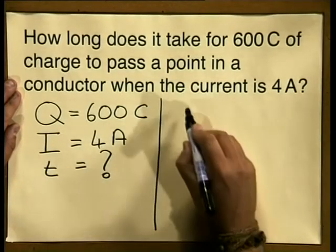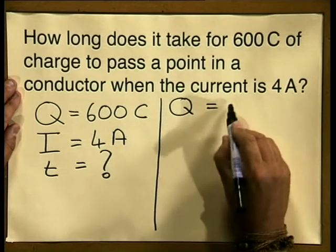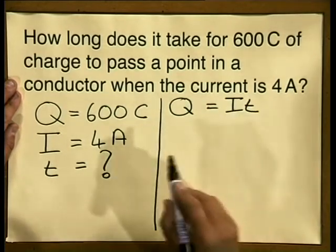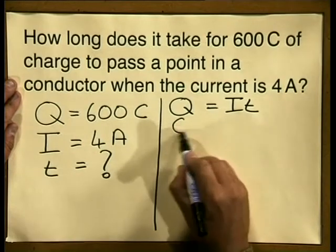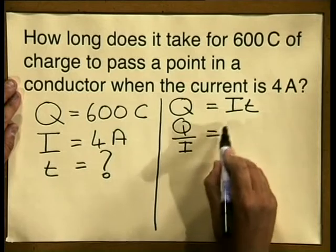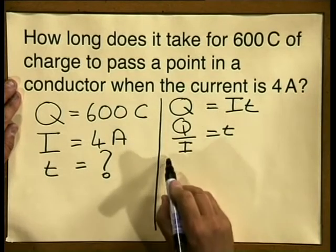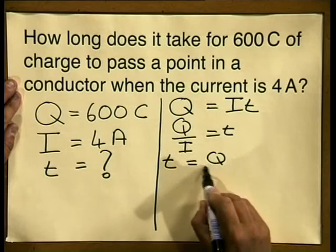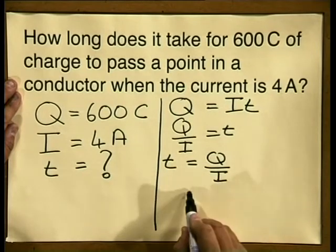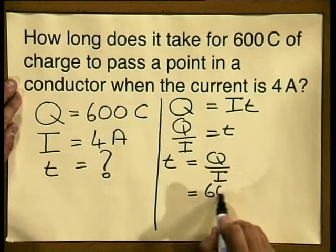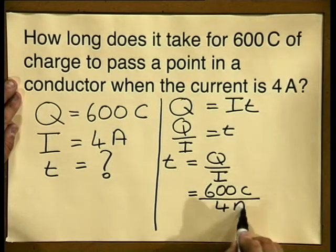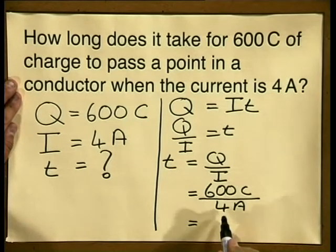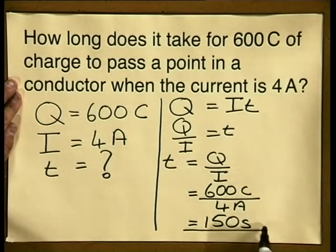Starting the problem: q is equal to i times t. Rearranging to make t the subject, q divided by i equals t, so t is equal to q divided by i. Substituting in our values, 600 coulombs divided by 4 amperes gives us an answer of 150 seconds.